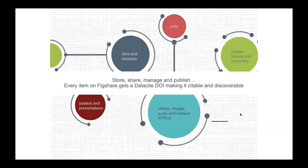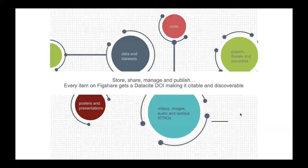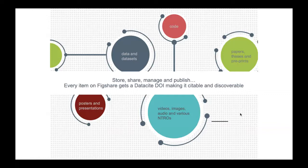This is where you can store, manage, and publish all types of content — your datasets, code, papers, presentations, and non-traditional research outputs. Data is essentially anything that has to do with what you're working on, what you have worked on, what goes with a published article or a presentation. Once you put them on Figshare and decide to publish, it gets a DOI so that it can be citable and discoverable.